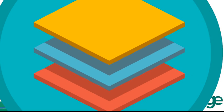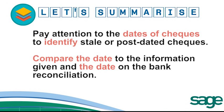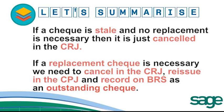Let's summarise. Pay attention to dates of cheques to identify stale or post-dated cheques. Compare the date to the information given and the date on the bank reconciliation. If a cheque is stale and no replacement cheque is necessary, then it is just cancelled in the cash receipt journal. However, if a replacement cheque is necessary, we need to cancel in the CRJ, reissue in the CPJ, and record on the bank reconciliation statement as an outstanding cheque.